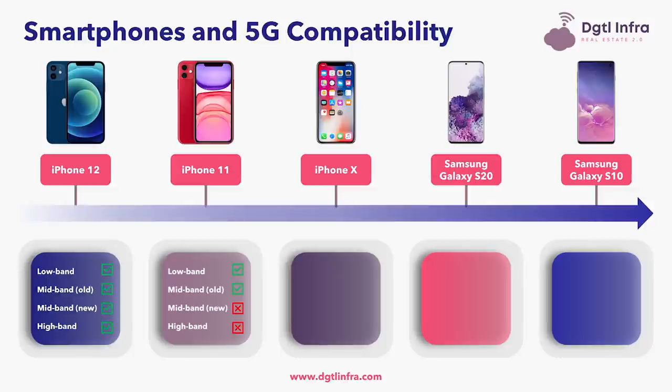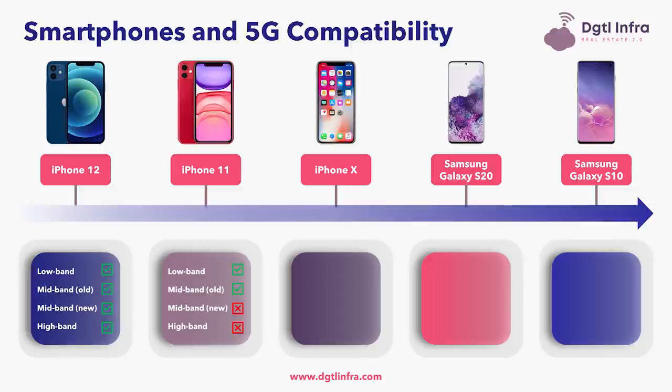Moving to the iPhone 11, which was released prior to any 5G services going nationwide, we can see that it is compatible with the same low-band spectrum — 600 MHz, 700 MHz, and 850 MHz — and the old mid-band spectrum including AWS, PCS, and BRS. However, it is not compatible with new mid-band spectrum such as CBRS and C-band, and it does not have capabilities for high-band spectrum.